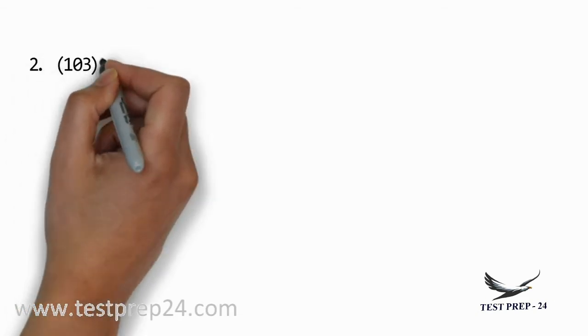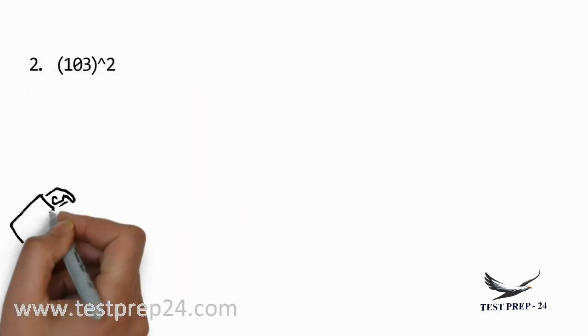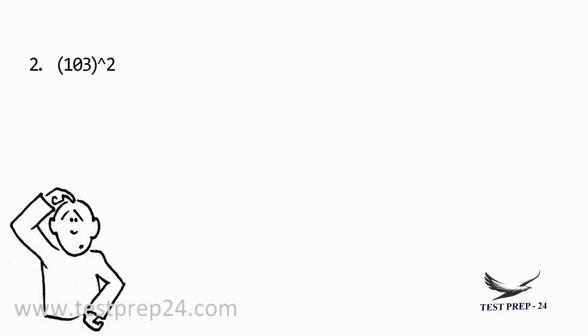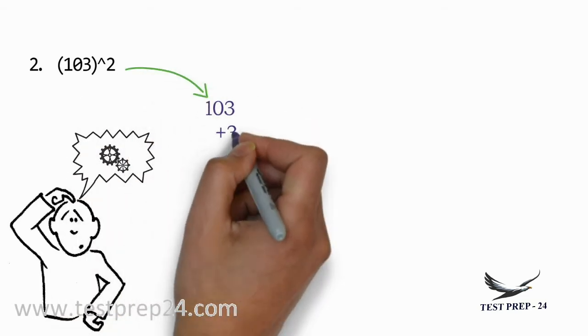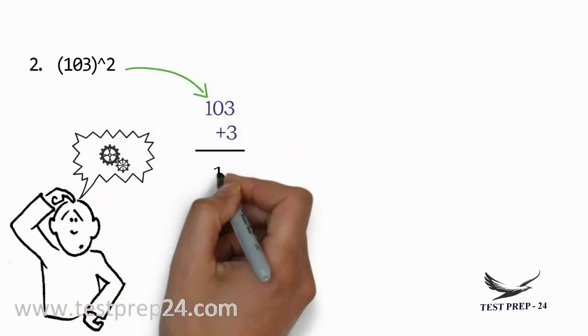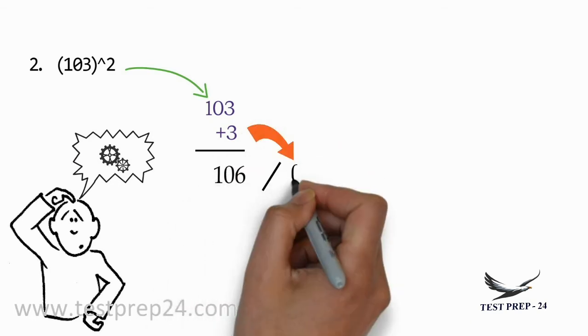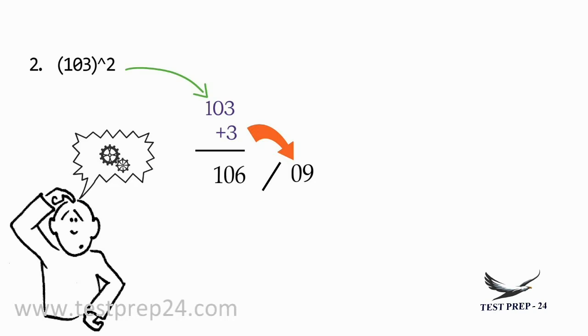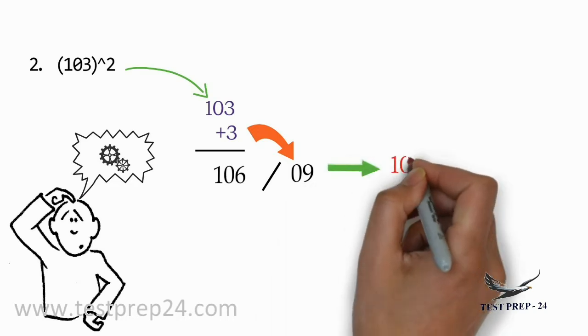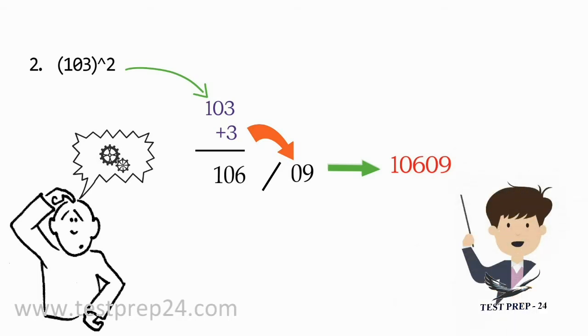Second example: 103 whole square. 103 is 3 greater than 100, so add 3 to 103. 103 plus 3 equals 106. The square of 3 is 9. Since you have a single digit, add 0 before the number, so your answer will be 10609.